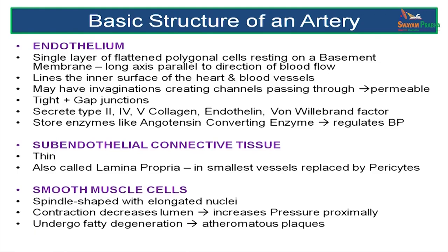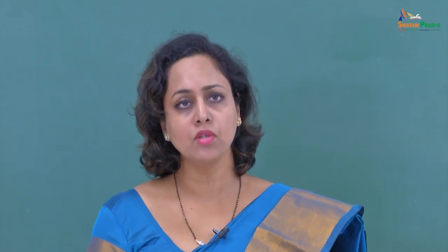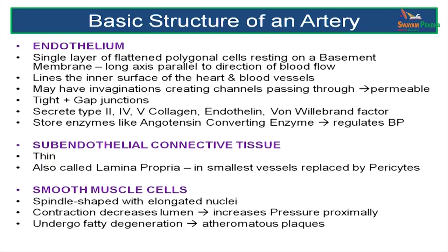The endothelium is made up of a single layer of flattened polygonal cells aligned along the axis of the artery. These cells form a barrier between the blood in the lumen and the arterial wall. Besides protection, they have other functions like storage of angiotensin converting enzyme, and secretion of type 2, 4, and 5 collagen, endothelin, and von Willebrand factor.